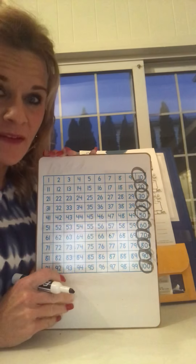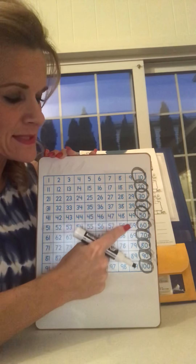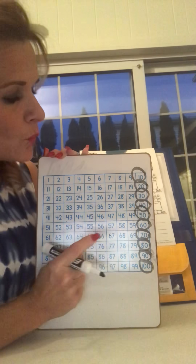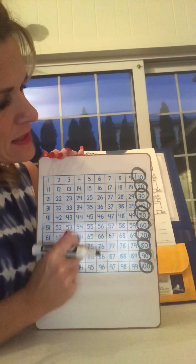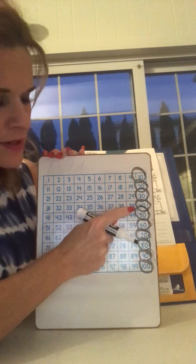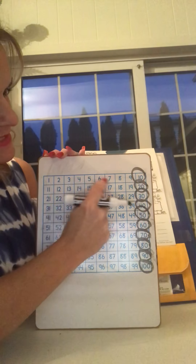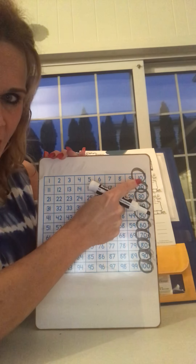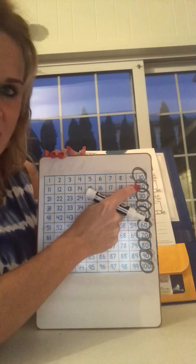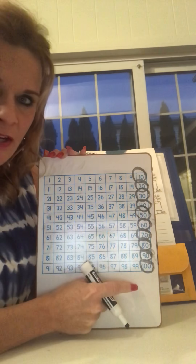You're probably already thinking about what is the same with all these numbers. When we're counting by tens, all of the numbers are on the right hand side here, aren't they? That's because this represents nine numbers and this is the tenth. Then we have nine more numbers and this is the tenth. So they're lined up in a column right over here.